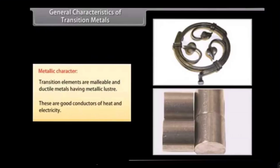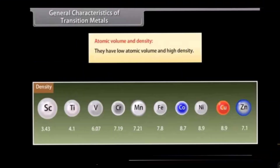General characteristics of transition metals: first, metallic character. In the d block we have metals, and metals show metallic character. Transition elements are malleable and ductile and have metallic luster; they are good conductors of heat and electricity. Another characteristic is atomic volume and density — transition elements have low atomic volume and high density, since density equals mass divided by volume.